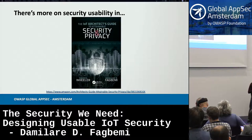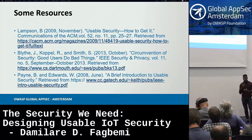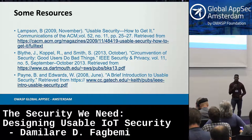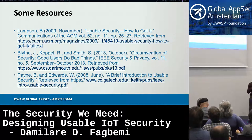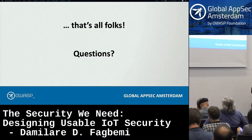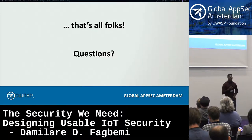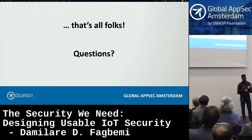We've got more on security usability in the book on IoT architecture, security, and privacy. There are resources in the links regarding circumvention of security controls, the systematic approach users take when security becomes a hindrance, how to get usable security, and other design principles for usable security. Any questions?